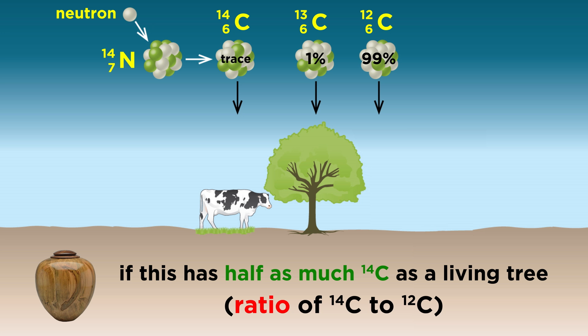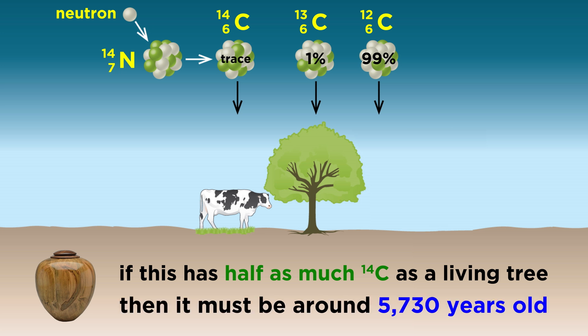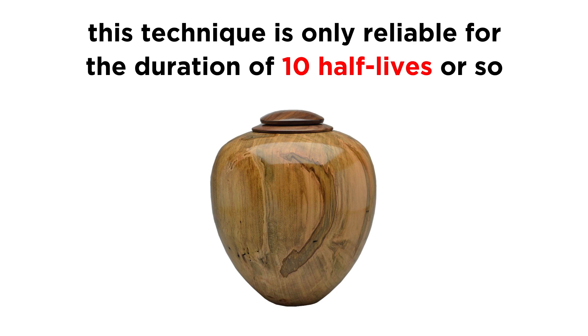That means that if we find a wooden artifact made from a once living tree, and then use a mass spectrometer to determine that the ratio of carbon-14 to carbon-12 in that artifact is half of what it is in a currently living tree, that object must be around 5,730 years old, because half of the carbon-14 present when the wood was part of the living tree has already decayed. Of course, if any more than ten or so half-lives have elapsed, this technique becomes less and less reliable.